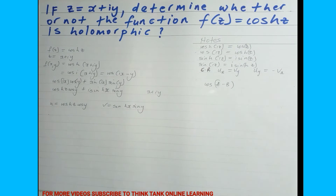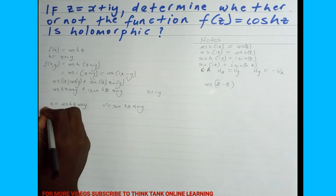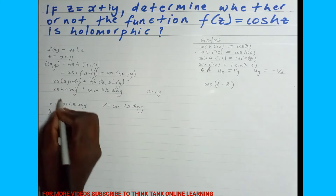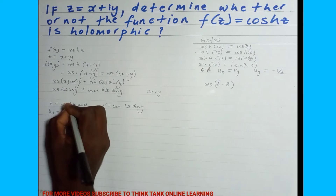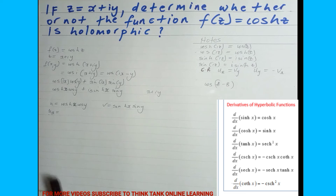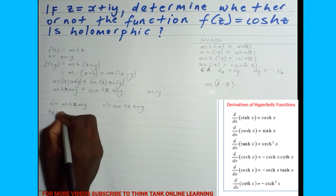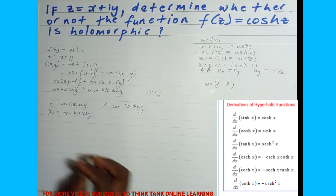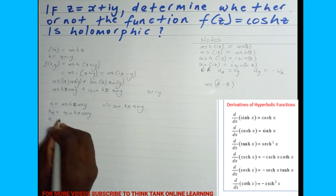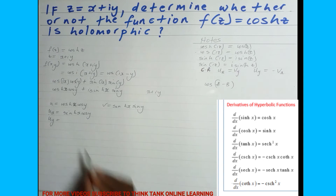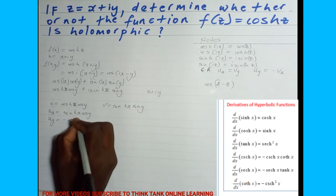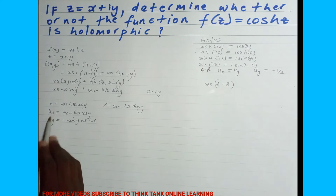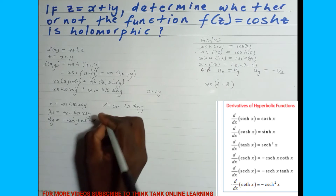Now I'm going to apply the Cauchy-Riemann method. We have u = cosh(x)cos(y) and v = sinh(x)sin(y). I'm going to find the partial derivative of u with respect to x: differentiating cosh(x) gives sinh(x), so u_x = sinh(x)cos(y). Then differentiating u with respect to y: the derivative of cos(y) is negative sin(y), so u_y = -cos(h(x))sin(y).